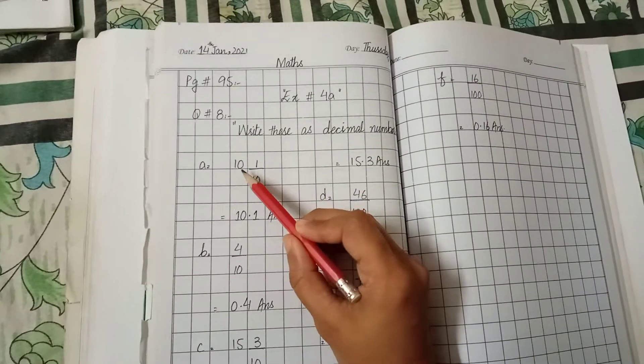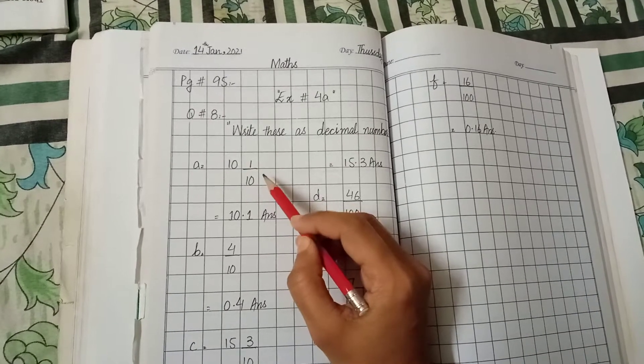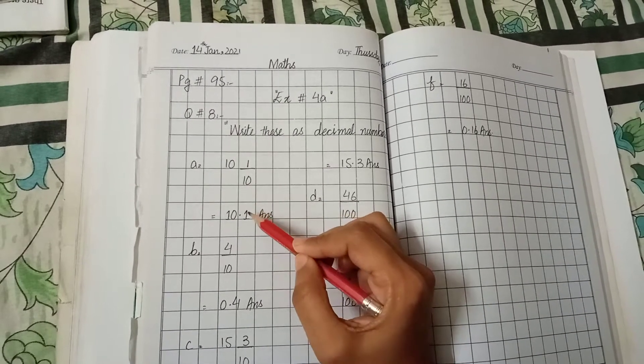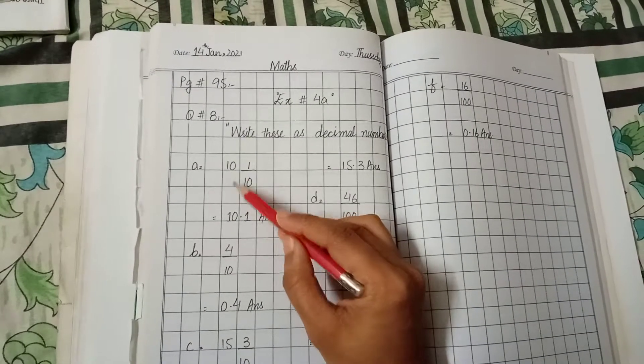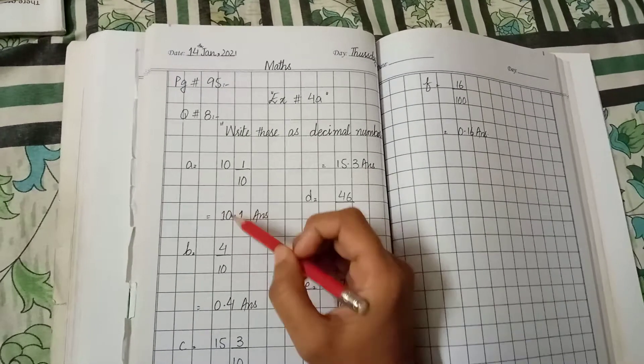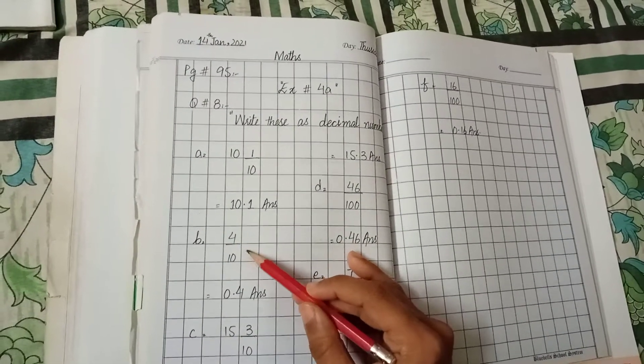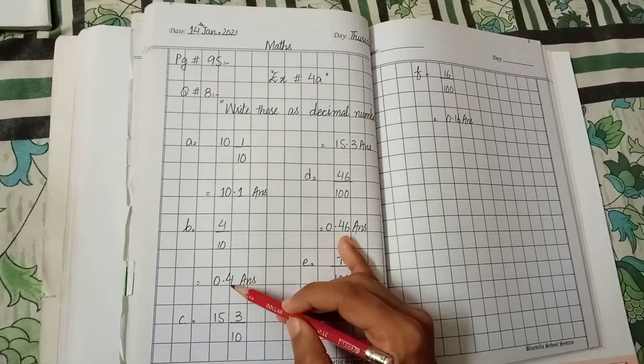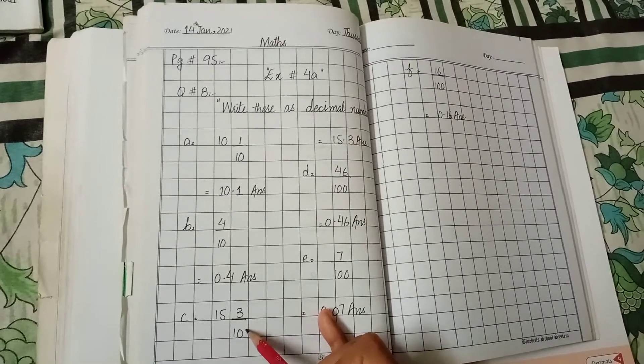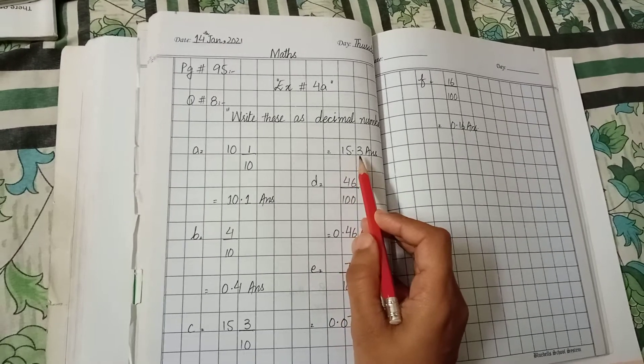Okay students, 10 into 1 by 10. We will write in decimal form. You know it is written in fraction form. We will write it in decimal form. So the answer is 10.1. Now B part is 4 by 10 and the decimal form is 0.4. C part is 15 into 3 by 10 and its decimal form is 15.3.